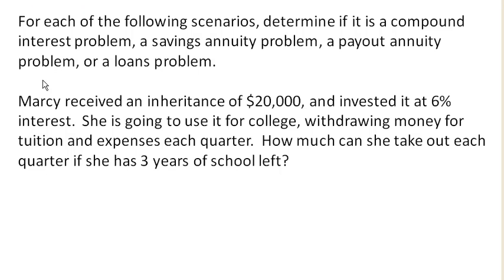So Marcy receives an inheritance of $20,000 and invested it at 6% interest. She's going to use it for college, withdrawing money for tuition and expenses each quarter. How much can she take out each quarter if she has three years of school left? The important thing here is that she's taking out money each quarter — she's not just doing it once, which would suggest compound interest. She's doing it every quarter.